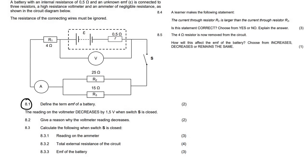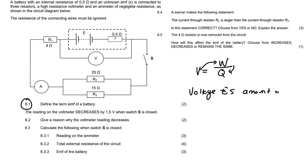Question 8.1 says define EMF. From grade 10, there was this formula: voltage equals W over Q. That formula gives us a very nice idea about what voltage actually means — voltage is equal to the amount of energy per coulomb of charge. EMF is also a voltage, but the EMF of the battery tells us the maximum amount of energy that the battery could give for each little charge.